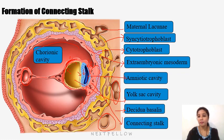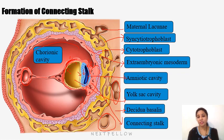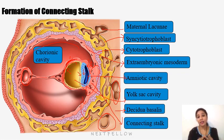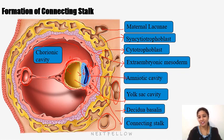This completes the second week of development. At the end of the second week, we saw the bilaminar germ disc formation, the connecting stalk formation, and the formation of the secondary yolk sac where the primary yolk sac turns into secondary. We also covered the chorionic cavity formation, how the extraembryonic mesoderm splits into two layers, and how the uteroplacental circulation begins during the second week of gestation. Thank you.